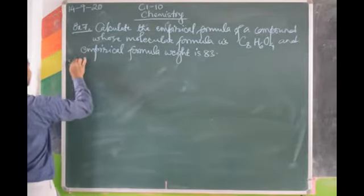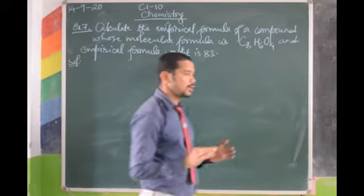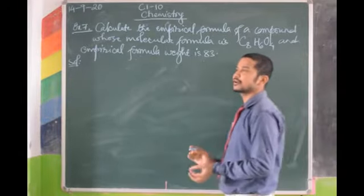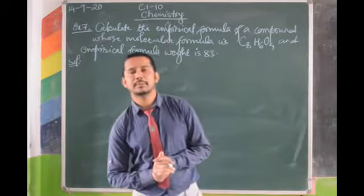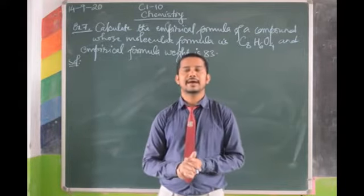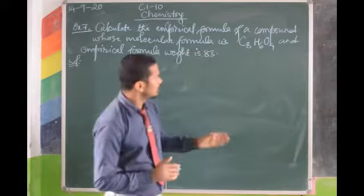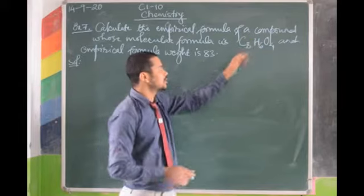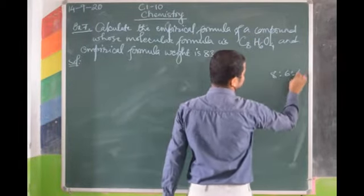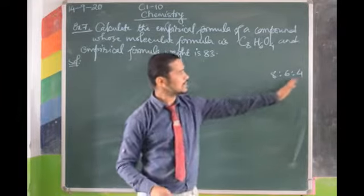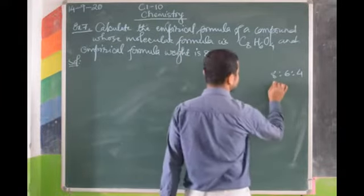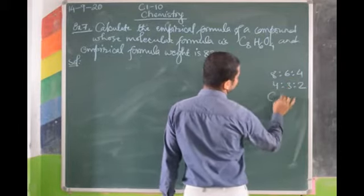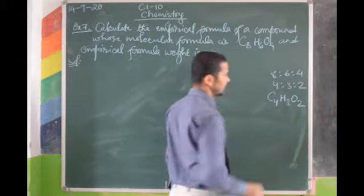Now how to do this? Using the concept that empirical formula is the simplest whole number ratio of the atoms of elements present in a molecule. Here the ratio is 8:6:4, which is not the simplest — all can be divided by 2, giving 4:3:2. That means C4H3O2 will be the empirical formula.